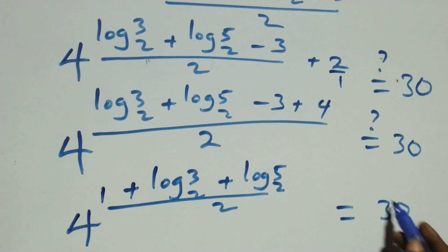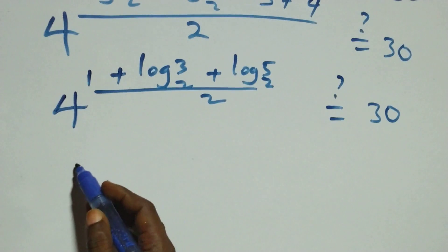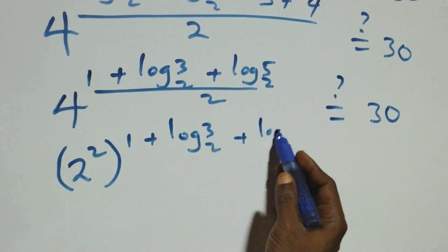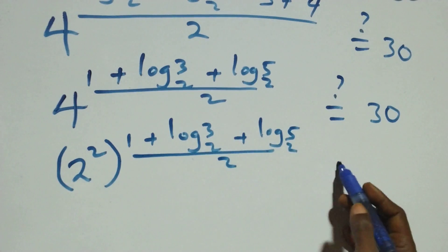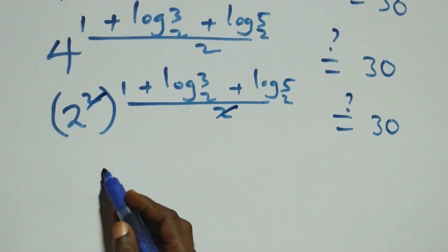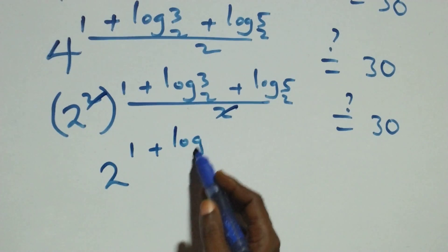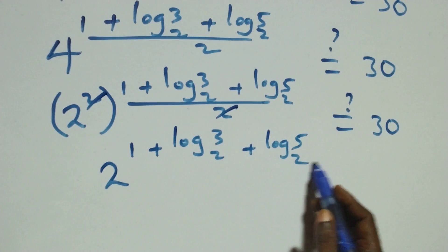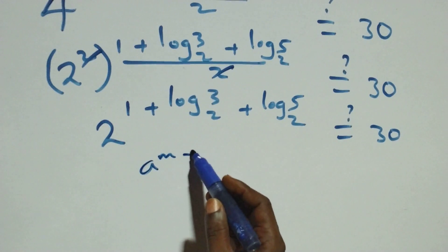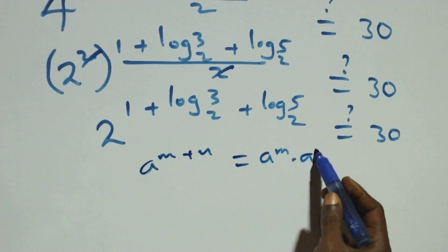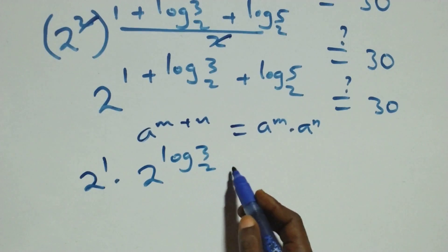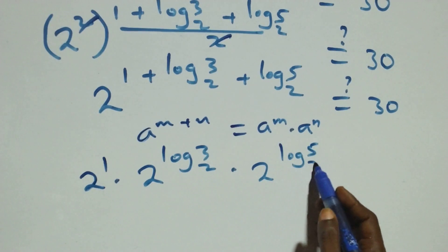We have 4 raised to power the quantity log₂3 plus log₂5 over 2. Now 4 can be expressed as 2 squared, which is raised to power 1 plus log₂3 plus log₂5, all over 2. We apply the exponent law: a raised to power n plus n equals a raised to power n times a raised to power n. So we have 2 raised to power 1, times 2 raised to power log₂3, times 2 raised to power log₂5. Is it equals to 30?